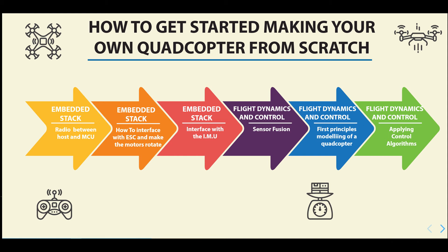Once we get everything working at the embedded level — we can make the motor spin, communicate through radio, and get the IMUs working — we'll move on to something more technical. We'll start dealing with the physics of how these things work so we can make our quadcopter more intelligent and fly more precisely. We want to write certain computations into the system so it's able to be more stable and won't just crash. And that's when we talk about flight dynamics and control.